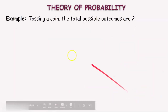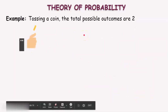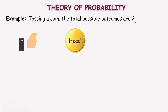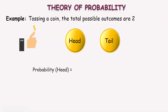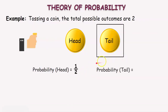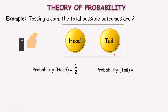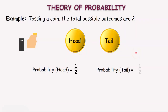Let us see another example: tossing a coin. In tossing a coin, the total possible outcomes are 2 — head and tail. For the probability of getting a head, since there is only one head among the possible outcomes, the favorable outcome is 1 out of 2. Therefore, P(H) is equal to 1 by 2. Similarly, for the probability of getting a tail, the favorable outcome is 1 out of 2 possible outcomes. Therefore, P(T) is also 1 by 2.